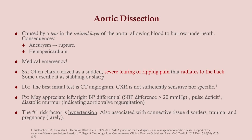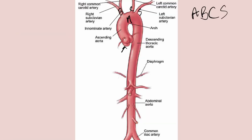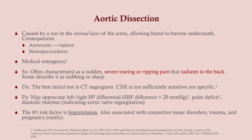Aortic dissection is due to a tear in the intimal layer, which allows blood to burrow underneath. Two layers are weaker than three, so with blood contained by only two layers, you're more likely to develop an aneurysm, and aneurysms rupture. You can also get hemopericardium, because the aorta is contiguous with the pericardial space, allowing blood to collect there and potentially cause tamponade.